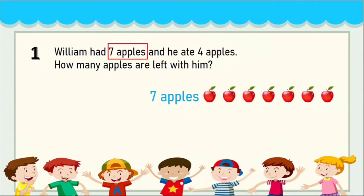William had seven apples — let us count: one, two, three, four, five, six and seven. He ate four apples, which means he is running short of four apples because he already ate them, so we write four apples. The word 'left' is in the question, so we need to subtract from the given number: out of seven, we will subtract four.